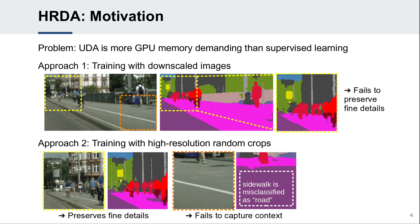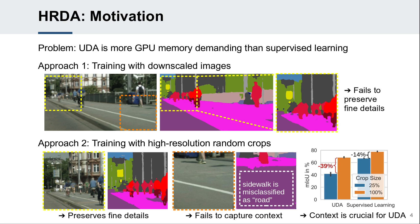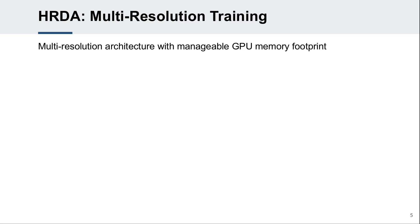This is a crucial disadvantage for UDA, as context information and scene layout are often domain-robust. Quantitatively, the performance drop of a smaller crop is about three times larger for UDA than for supervised learning.